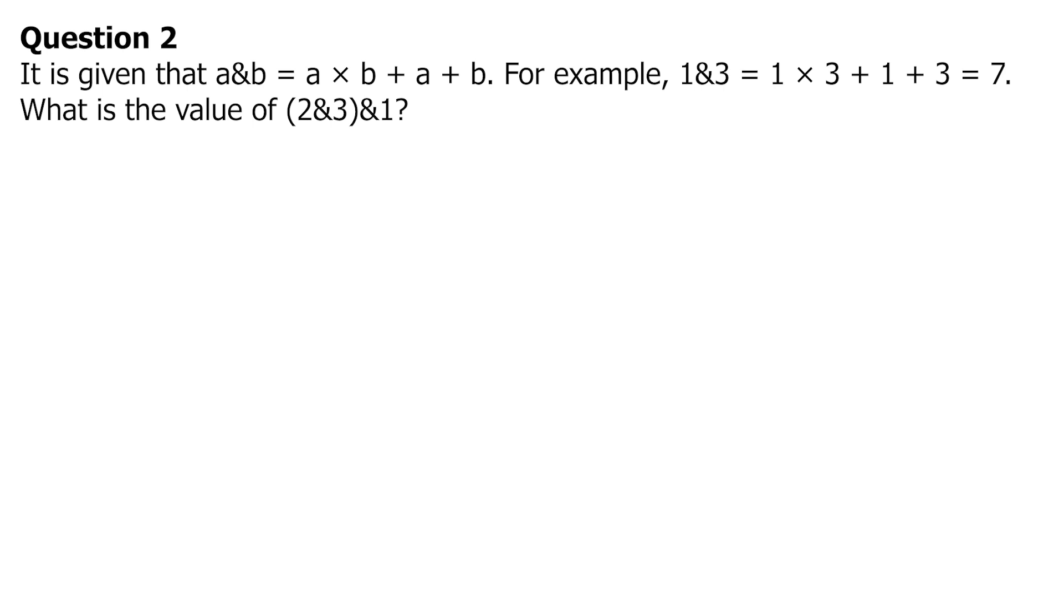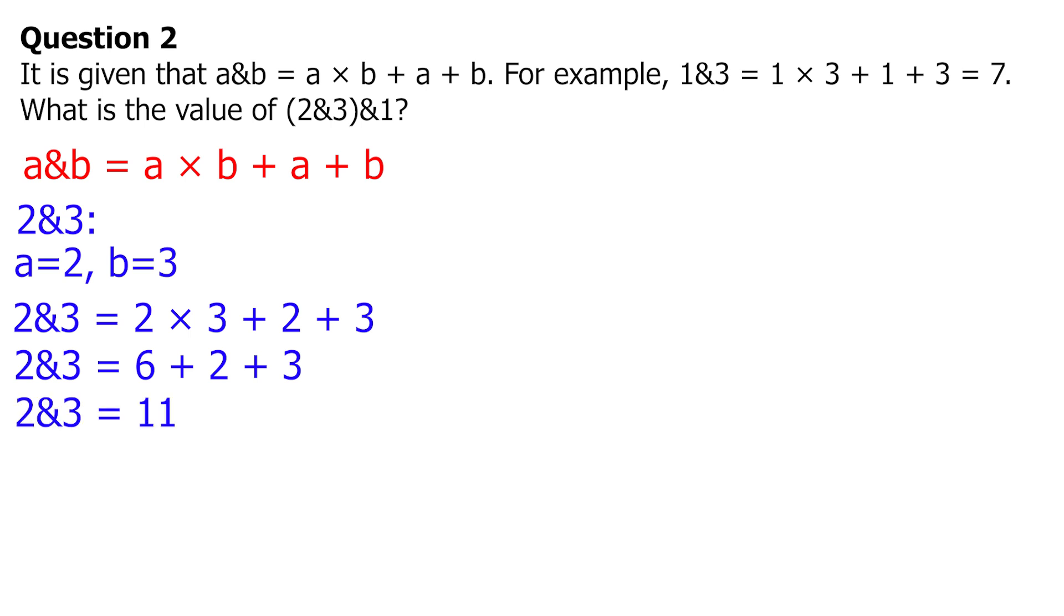Let's calculate the value of 2 and 3 and 1 step by step using the given formula A and B equals A times B plus A plus B. Step 1: Calculate for the value of 2 and 3. Set A equals 2, B equals 3. Using the formula, we have 2 and 3 equals 2 times 3 plus 2 plus 3. Simplify: 2 and 3 equals 6 plus 2 plus 3. 2 and 3 equals 11.